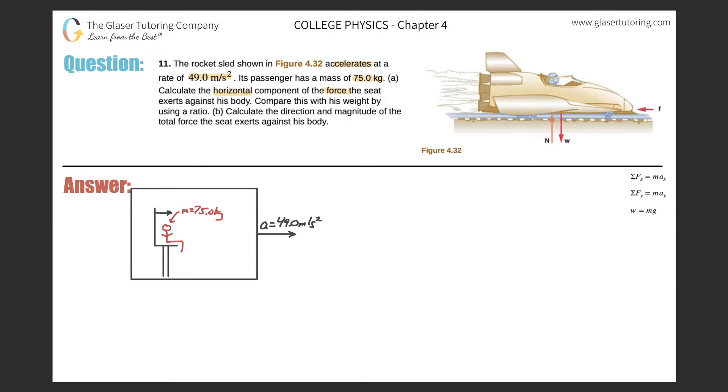So how do we do that? Well, let's consider our formula over here on the right-hand side, that the sum of all the forces in the x direction should equal the mass of the object multiplied by the acceleration in that same direction, meaning the x direction. So the sum of all the forces, the horizontal forces in that x direction would equal the mass of the object we're talking about, so 75 kilograms, multiplied by its acceleration in meters per second squared, which is just 49.